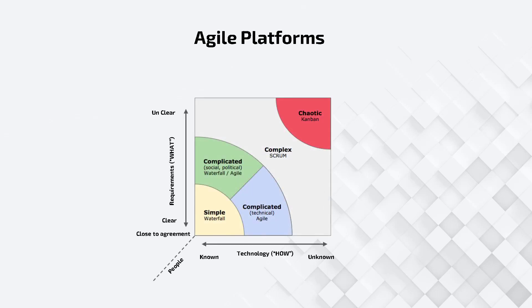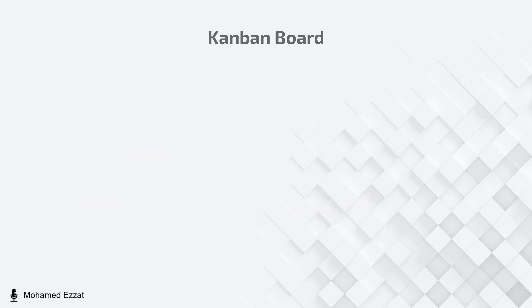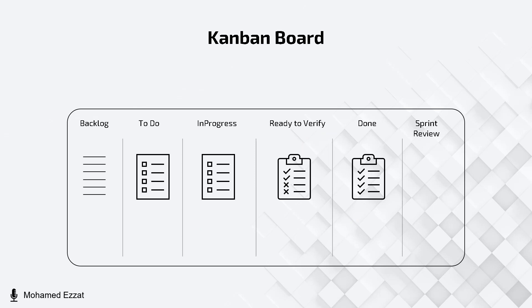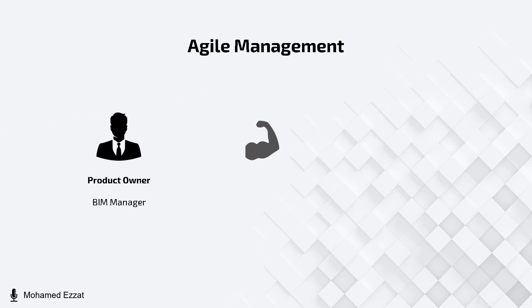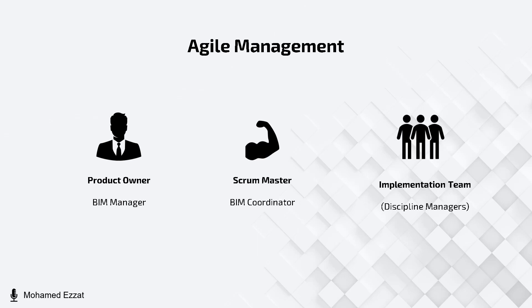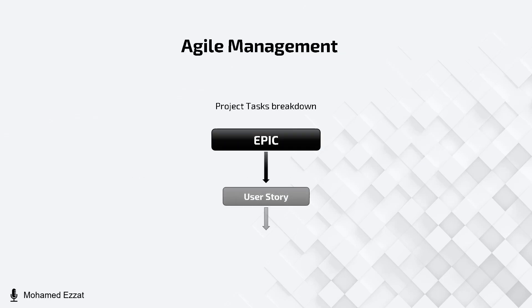We applied agile methodology in our project using the Scrum framework and Kanban board, based on the complexity and uncertainty of the project. The BIM Manager played the role of product owner, the BIM Coordinator played the role of Scrum Master, and the discipline managers were the team. Project task breakdown was divided into epics, user stories, and user activities, with user activities prioritized based on the MoSCoW rule.